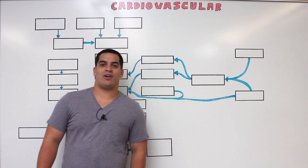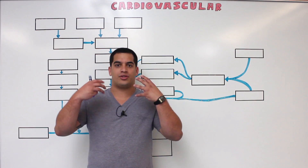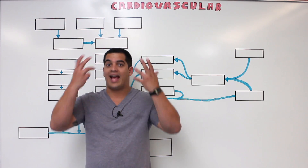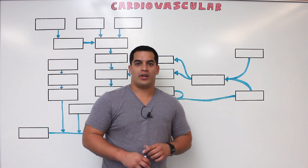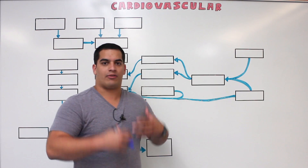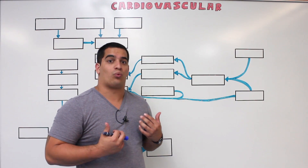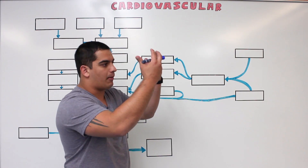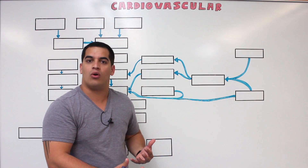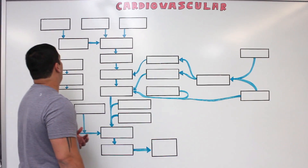Hi Ninja Nerds, in this video we're going to talk about the veins that are going to be draining the structures of the head and the neck. We're going to be taking blood from the head and the neck and bringing it down to the right atrium — basically like a blood flow chart.